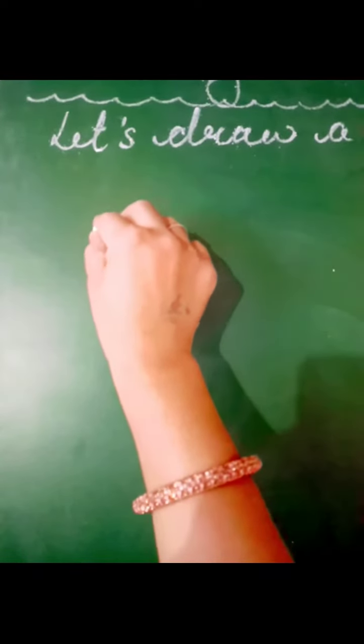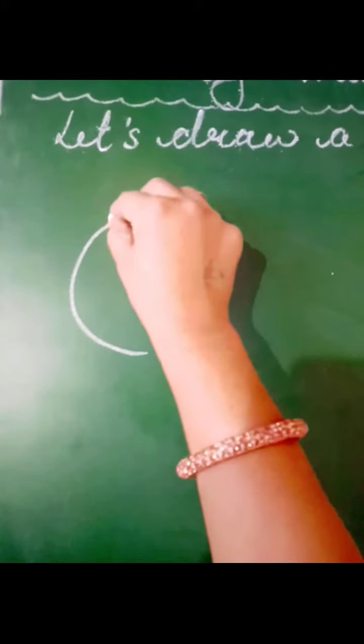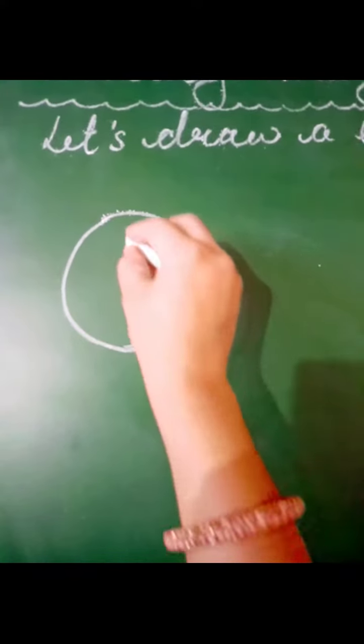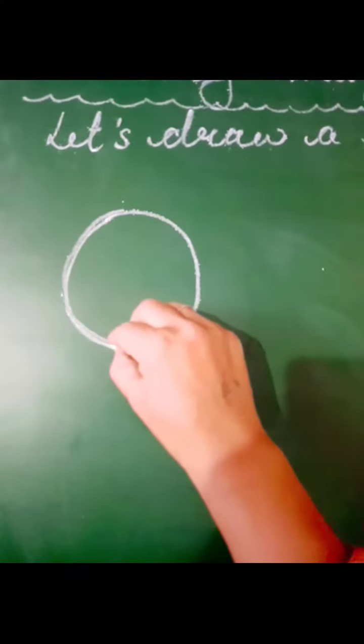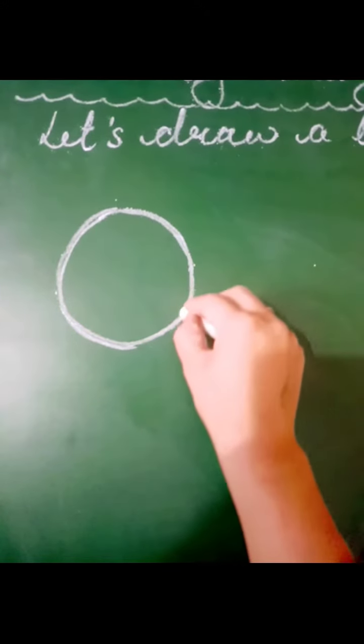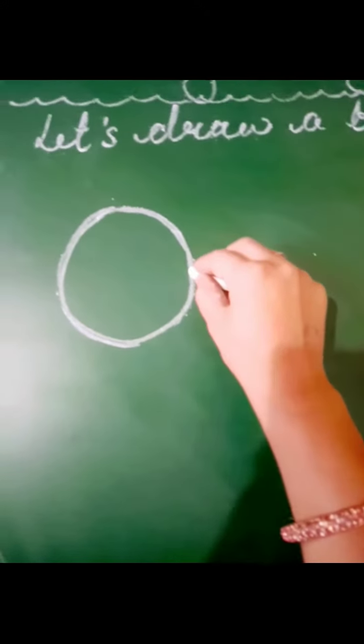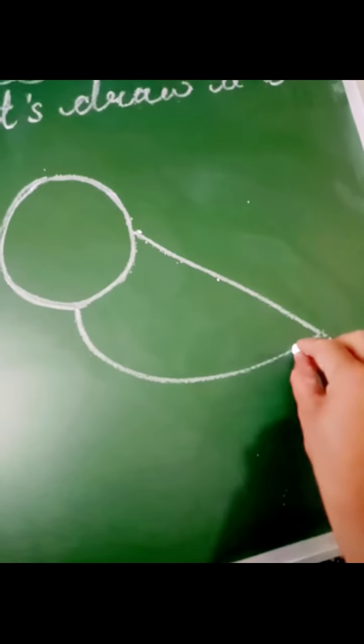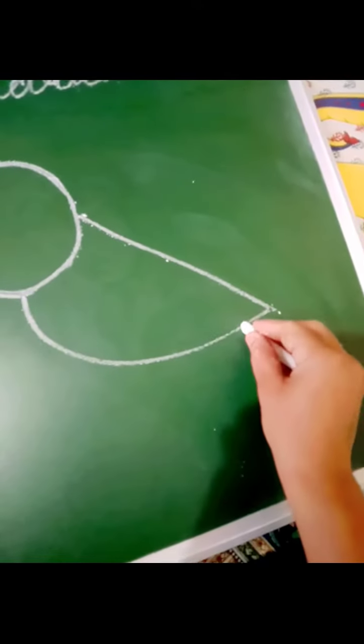Come on, let's draw. A curve, another curve - okay, two curves. This is one curve and this is another curve. A slanting line, a big curve, okay a big curve. A slanting line, one more slanting line.